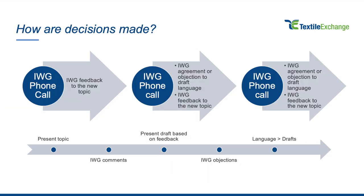How are decisions made throughout the revisions process? The IWG will be responsible for providing Textile Exchange with feedback and advice based on their expertise and experience. During each international working group call, Textile Exchange will present items that are within scope of the revision. The IWG will review the topic and provide feedback and comments in between each call, either in agreement or objection to the draft language of the requirements. During the next call, the new draft standard and a new topic will be presented. After a series of meetings, the final draft of the standard will be presented to the IWG and voting members will have the chance to vote to approve the final version.